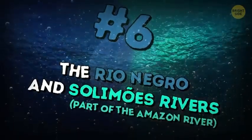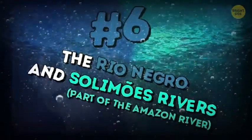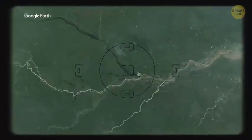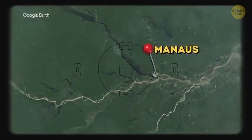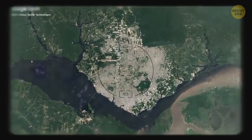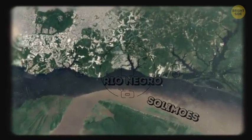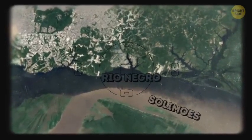The Rio Negro and Solomoes Rivers, part of the Amazon River. Six miles from Manaus, in Brazil. Rio Negro and Solomoes Rivers run into each other, but don't mix for about 2.5 miles. The Rio Negro is dark, and Solomoes light. They have a different temperature and speed of flow.